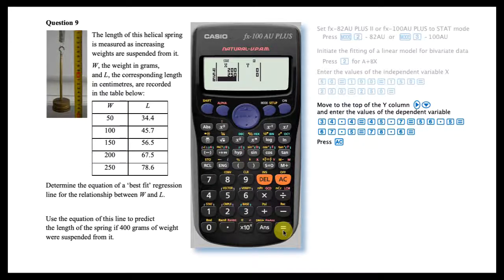Next, enter the values of the dependent variable in the adjacent column. Move the cursor to this column by arrowing right. Then move to the top of the column. This can be done by arrowing up repeatedly or, using a clever shortcut, arrow down once to cycle from the bottom of the list back around to the top. Now enter the Y values.